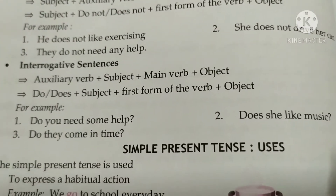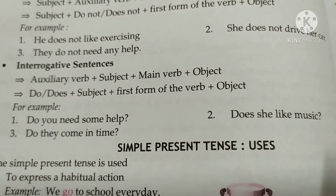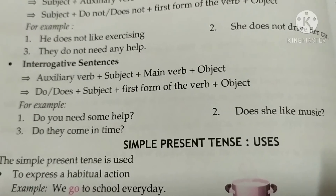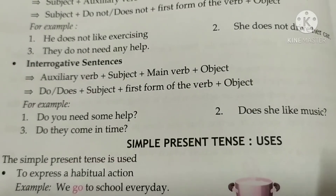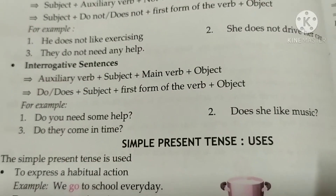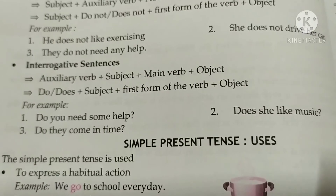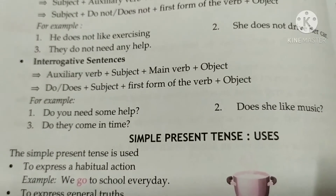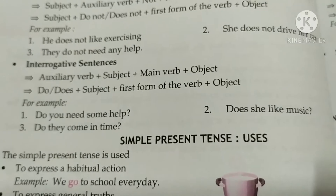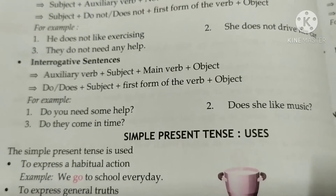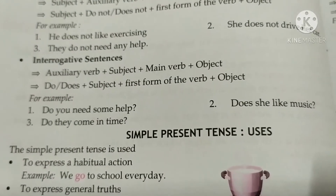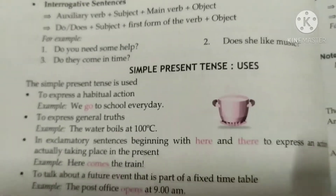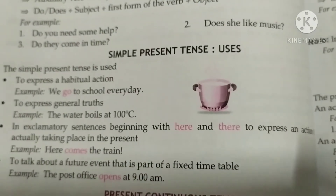For an interrogative sentence, the format is: Auxiliary verb + subject + main verb + object, that is Do/Does + subject + first form of verb + object. For example: 'Do you need some help?' When making an interrogative sentence, we put 'do' or 'does' first.